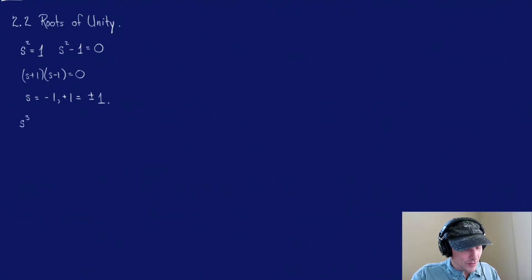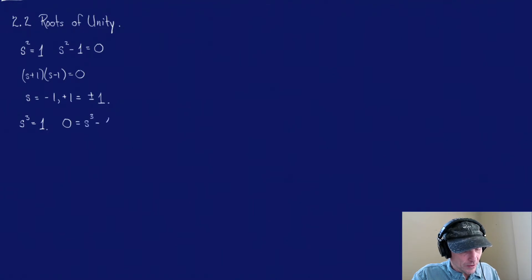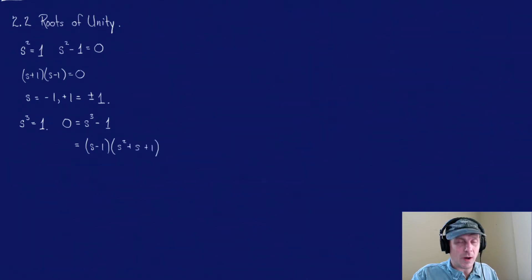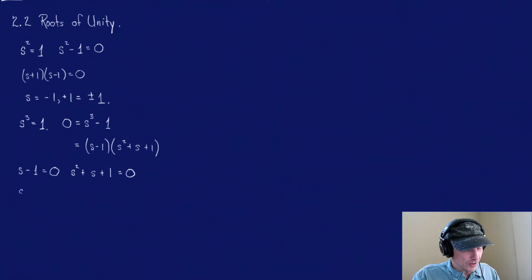So s cubed is equal to 1. You could take the cube root of both sides and come up with s equals 1, but if you take the route of factoring this, you can say this is the same as 0 equals s cubed minus 1. If we factor this, it's s minus 1 times s squared plus s plus 1. One of our roots comes from s minus 1 equals 0. The other two roots come from s squared plus s plus 1 equals 0. So our first solution is s equals 1.